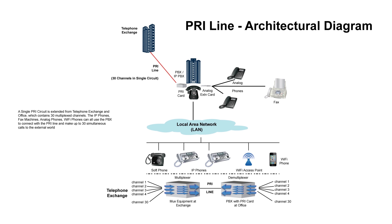The purpose of a PRI card is to separate out the voice and data channels. Remember, a PRI can also be used for data applications. The local area network would contain items such as IP phones, Wi-Fi access point, Wi-Fi phone, as well as a soft phone.